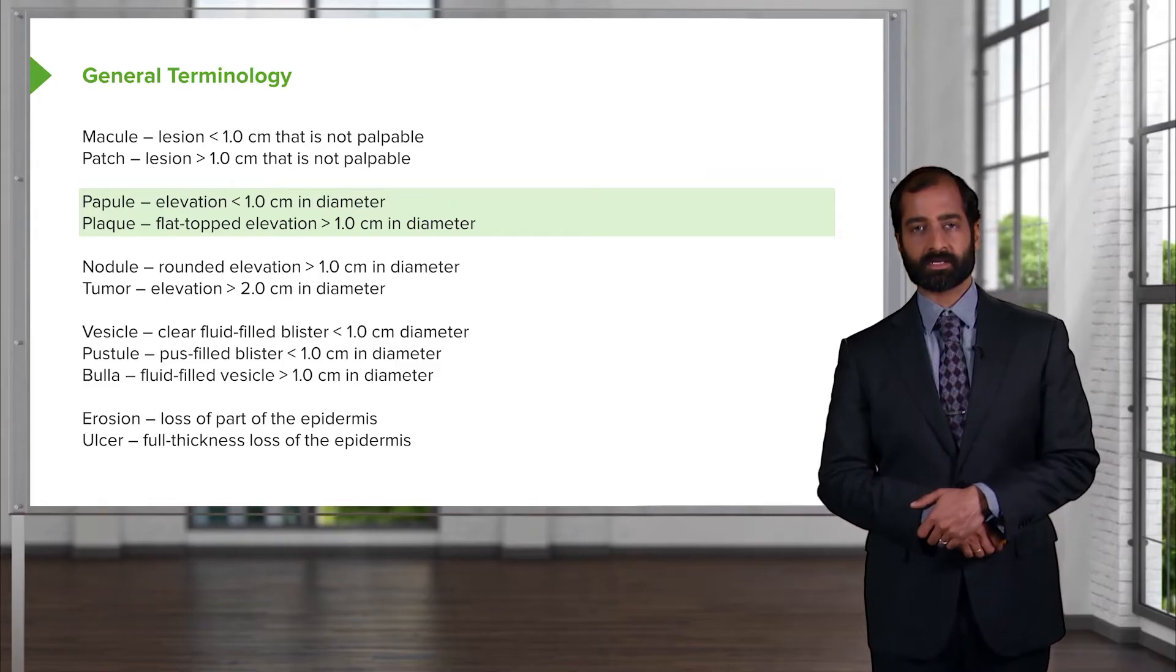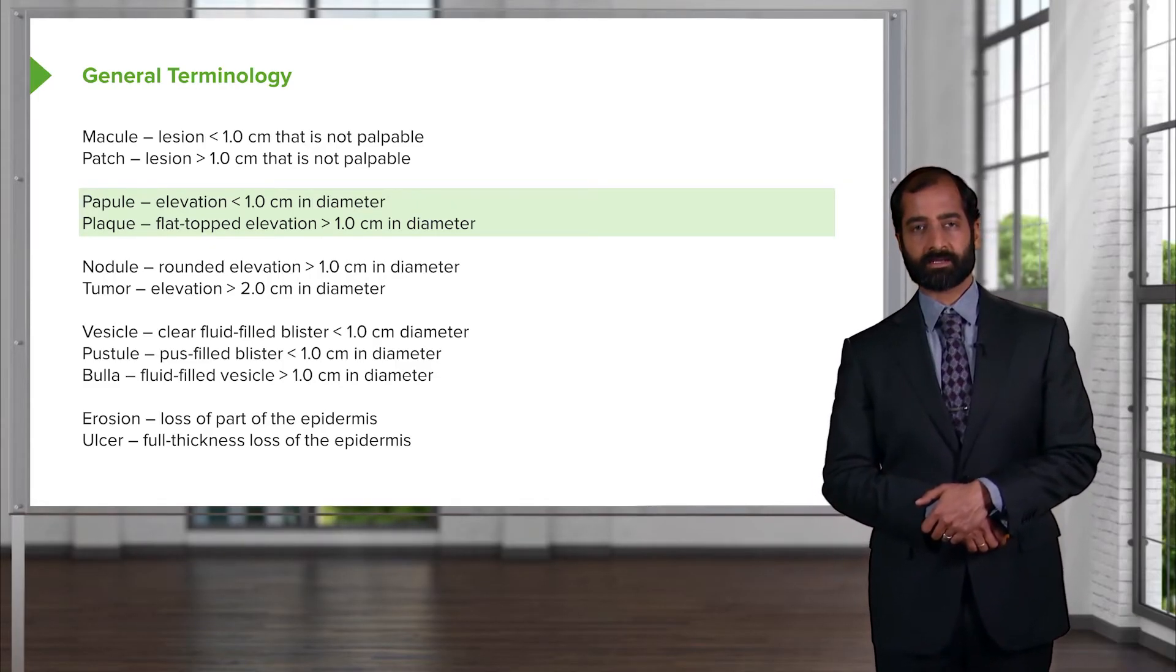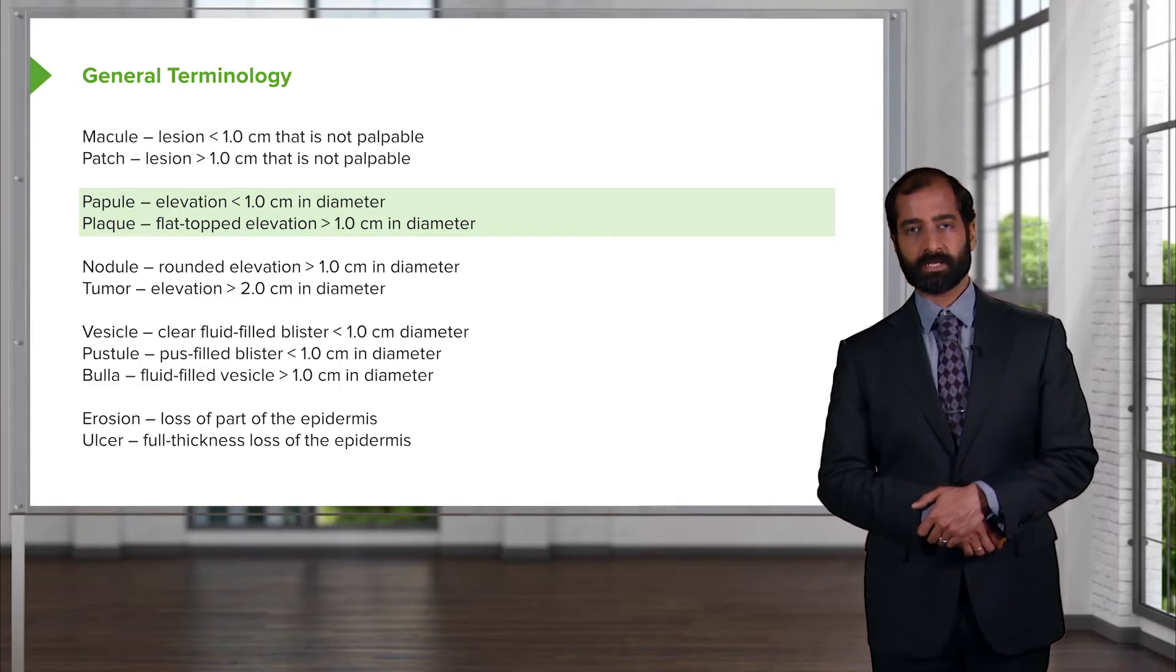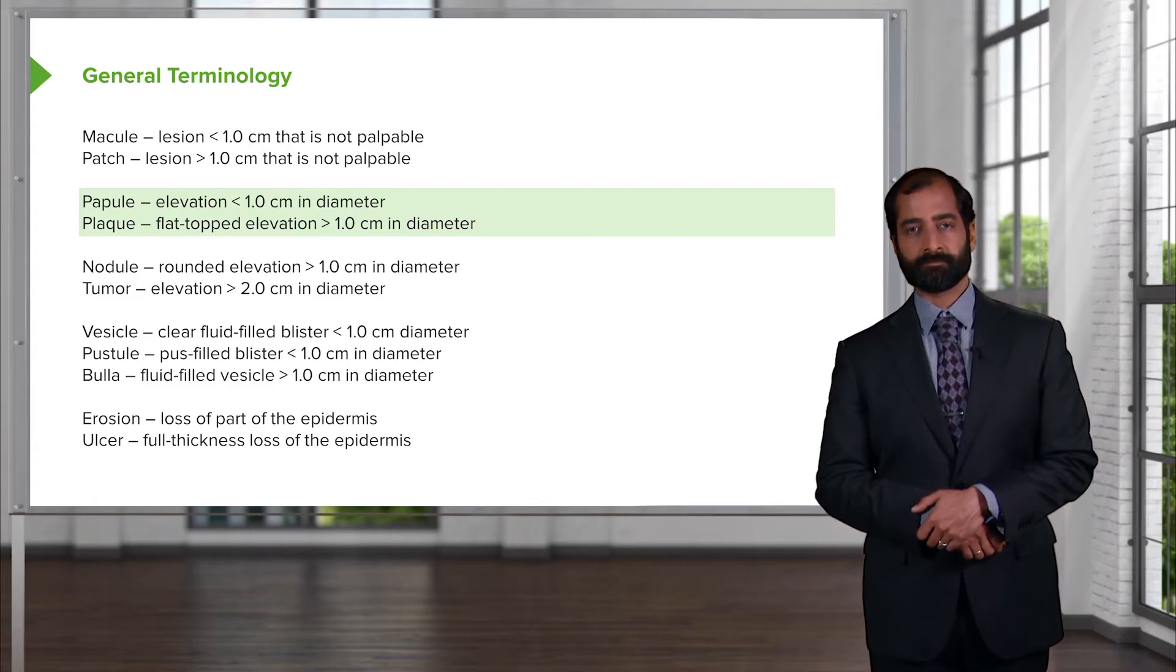Or you might have a patient that has a condition we'll talk about called psoriasis. In psoriasis, this is a plaque, and this would be a flat-topped elevation. You've heard of salmon-colored plaque with psoriasis. And here the elevation would be greater than one centimeter.